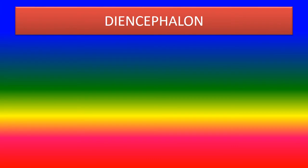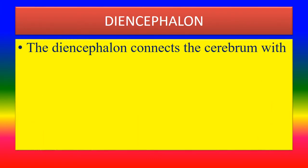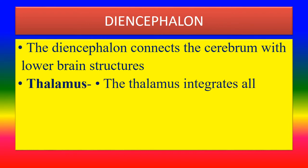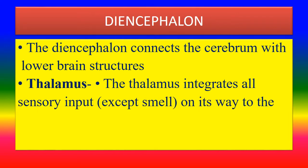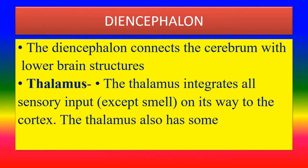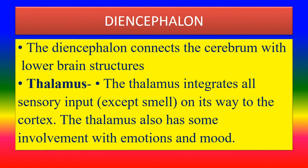The diencephalon connects the cerebrum with lower brain structures. The thalamus integrates all sensory inputs except smell on its way to the cortex, and also has some involvement with emotions and mood.